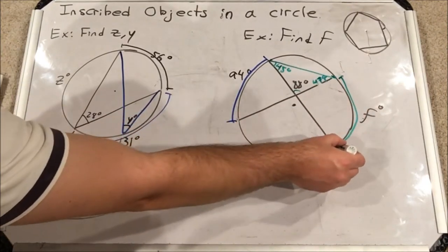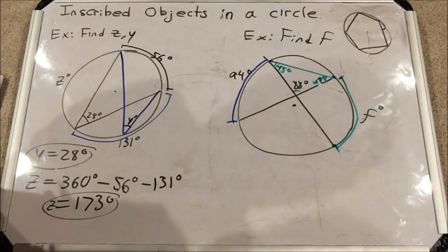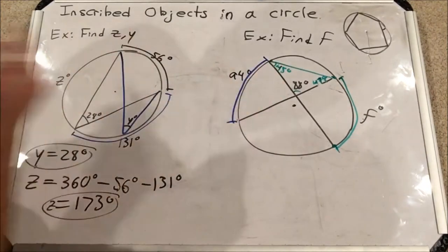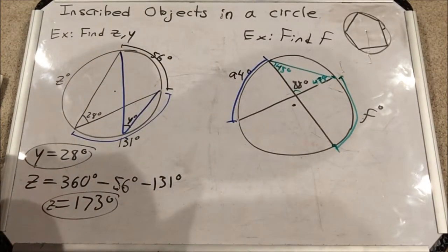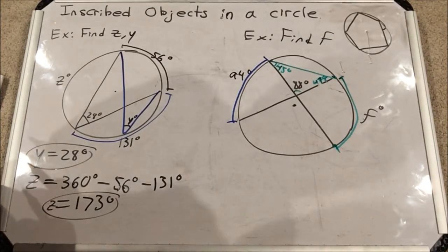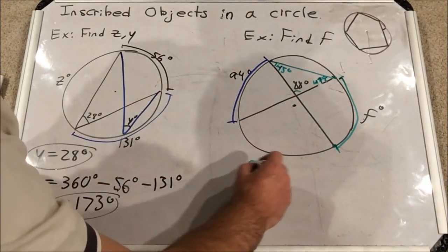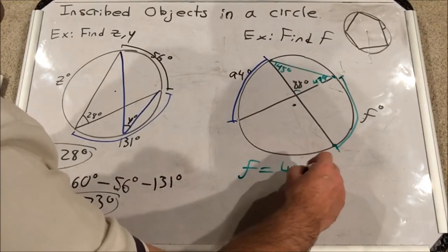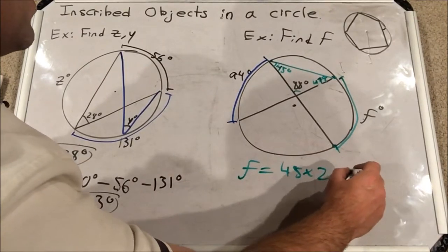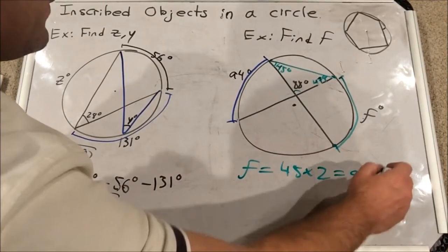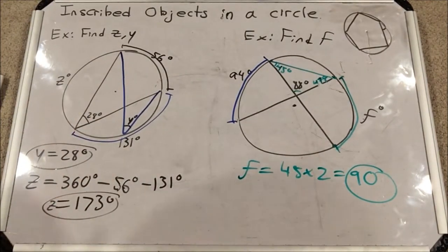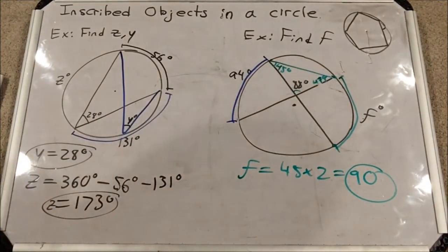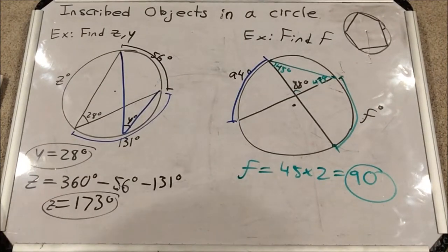So all we have to do is double 45 degrees, and we will find F. 45 times 2, well, that's 90. So F equals 45 times 2, which is 90. So that wasn't actually that bad once you constructed this line and saw how it created two inscribed angles that would be very useful and connected to each other.